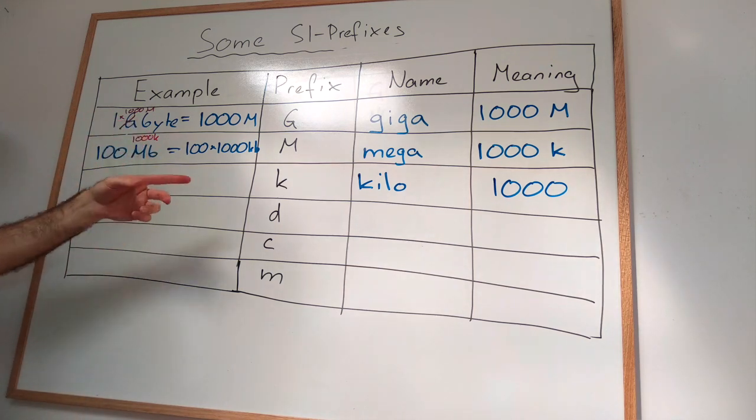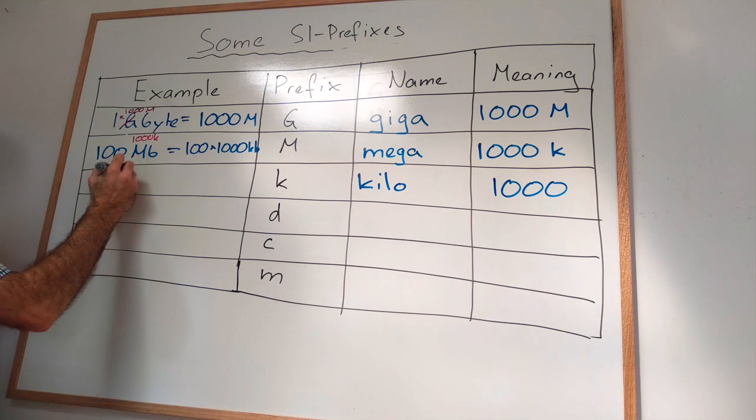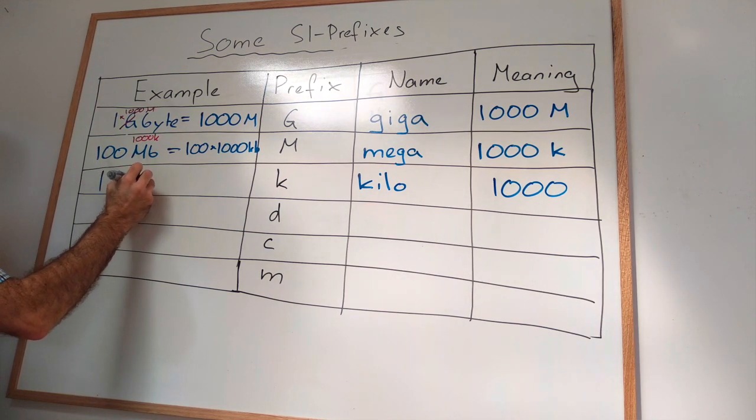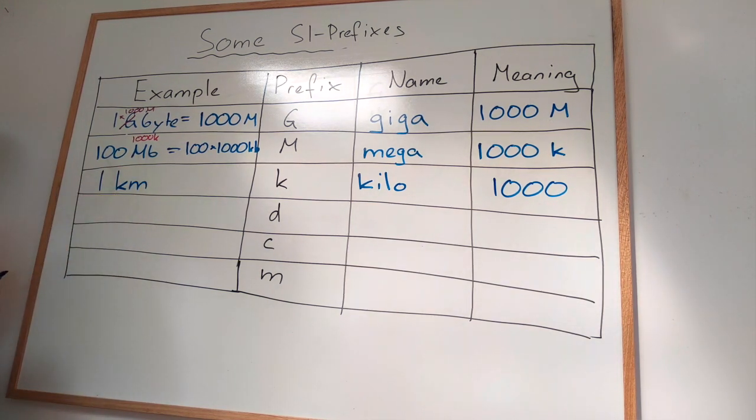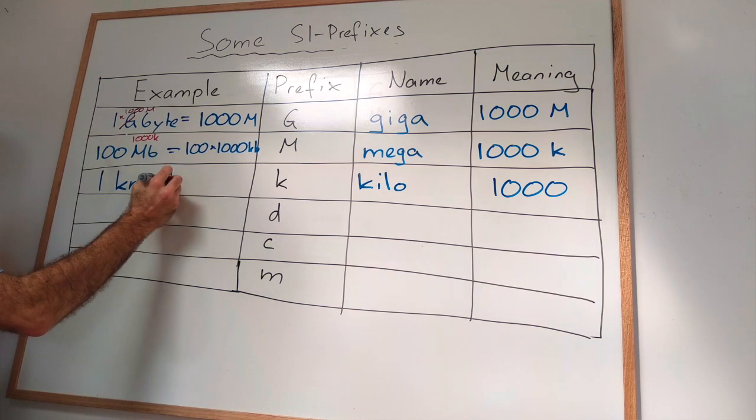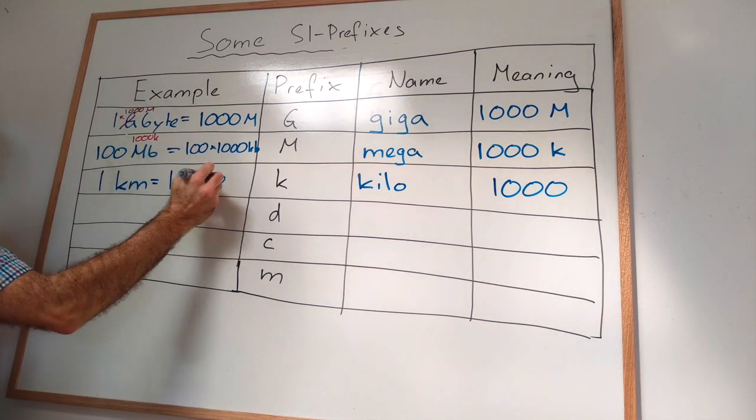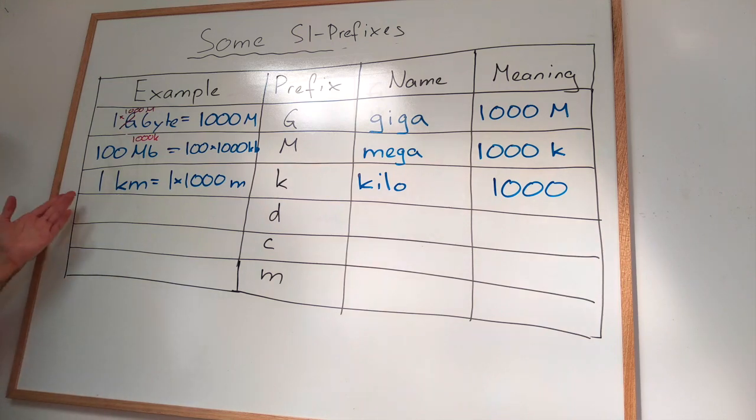Now, I want to change it because the kilo, you probably hear this more with kilometers. So what does one kilometer stand for? Well, the kilo here is the 1000. So this is one times 1000 meters. So one kilometer is 1000 meters.